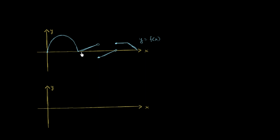I've got this crazy discontinuous function here, which we'll call f of x. My goal is to try to draw its derivative right over here. So what I'm going to need to think about is the slope of the tangent line, or the slope at each point in this curve, and then try my best to draw that slope. So let's try to tackle it.